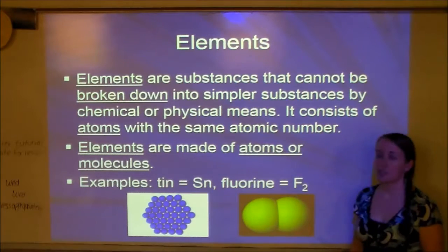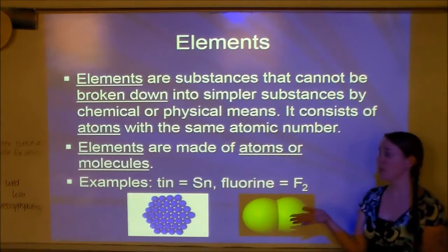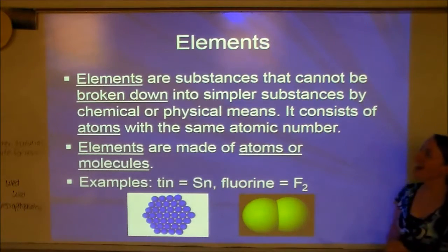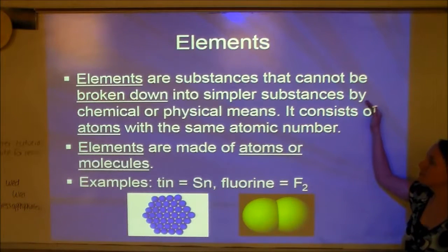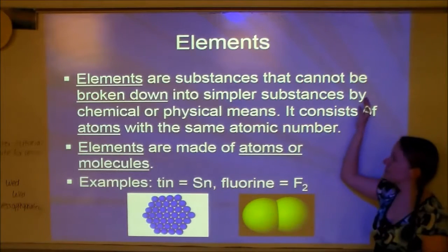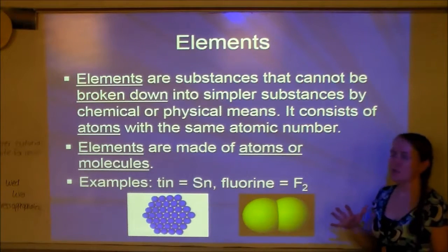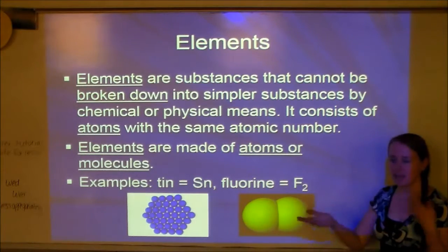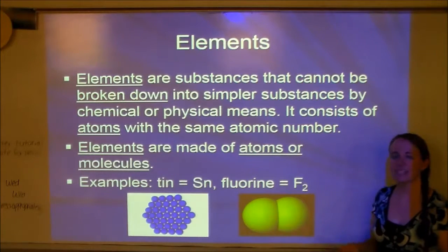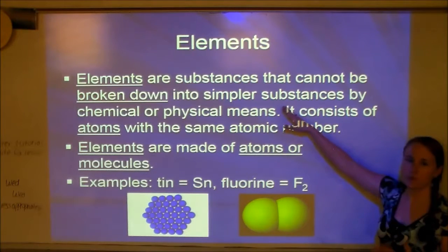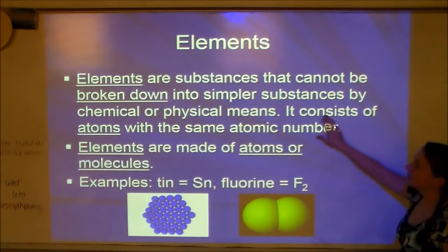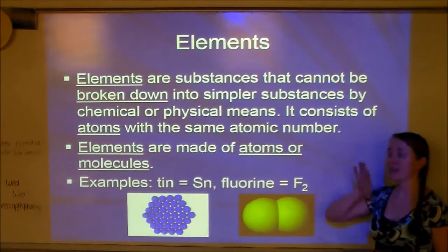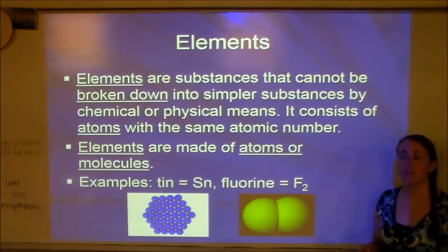Elements are substances that cannot be broken down into simpler substances by chemical or physical means. Once you get down to an element — like if you break down water into hydrogen and oxygen — those are both elements and you can't break them down any further. Elements are the most simple form of matter. They consist of atoms with the same atomic number, which is the number in the top corner of each element on the periodic table.